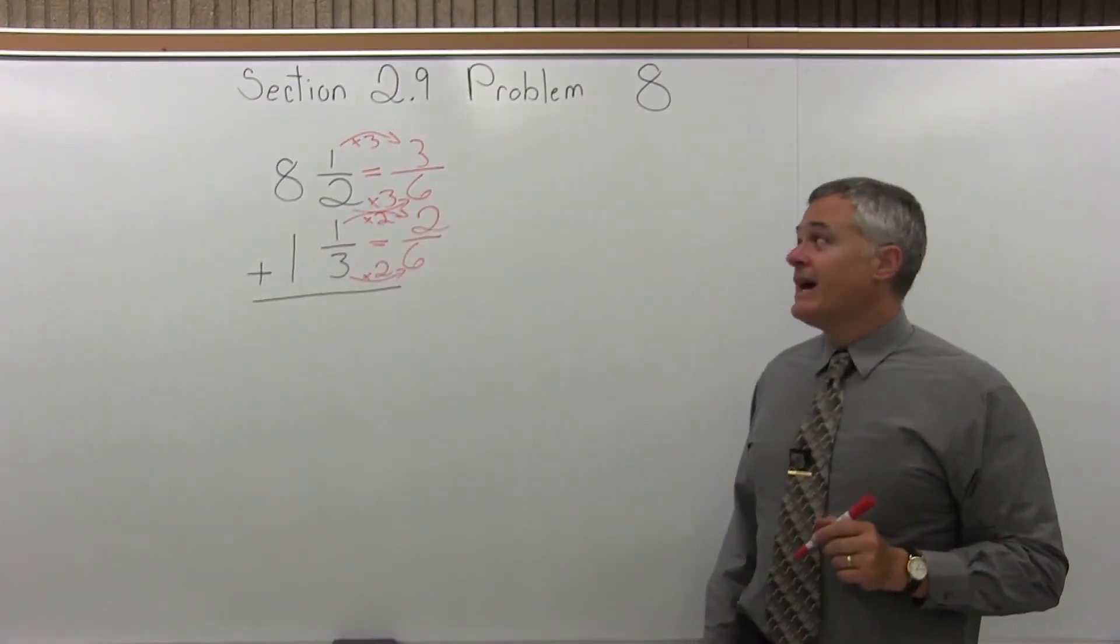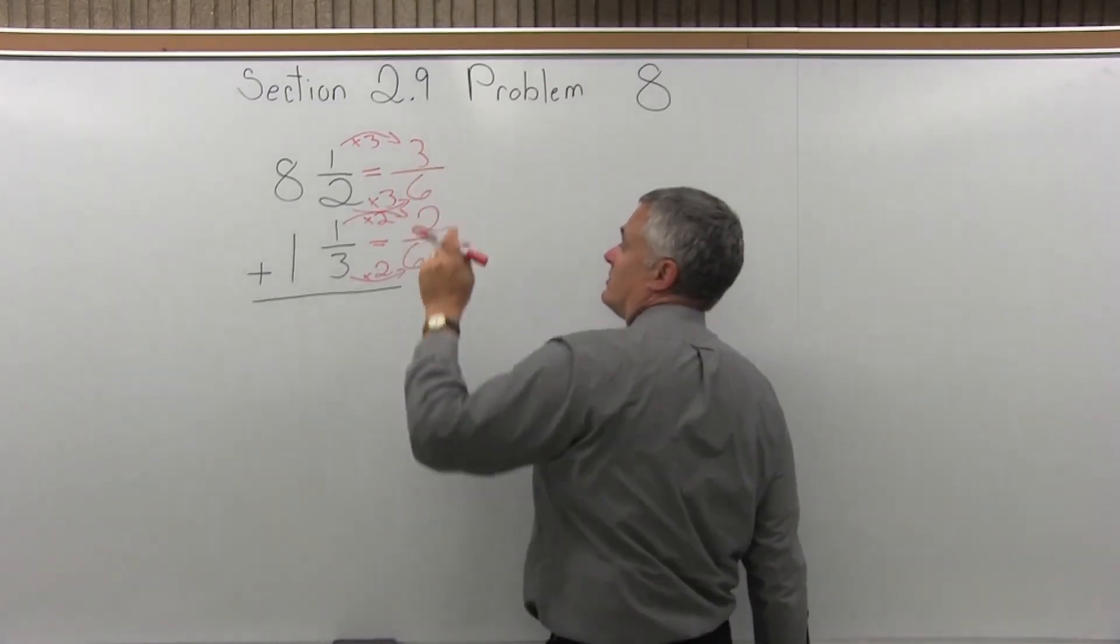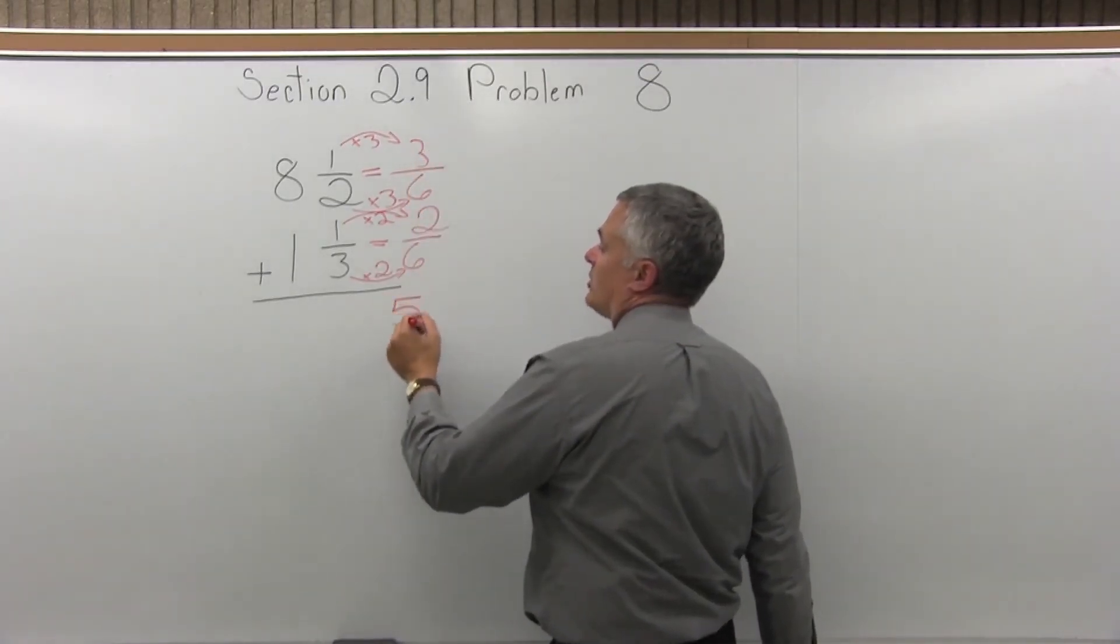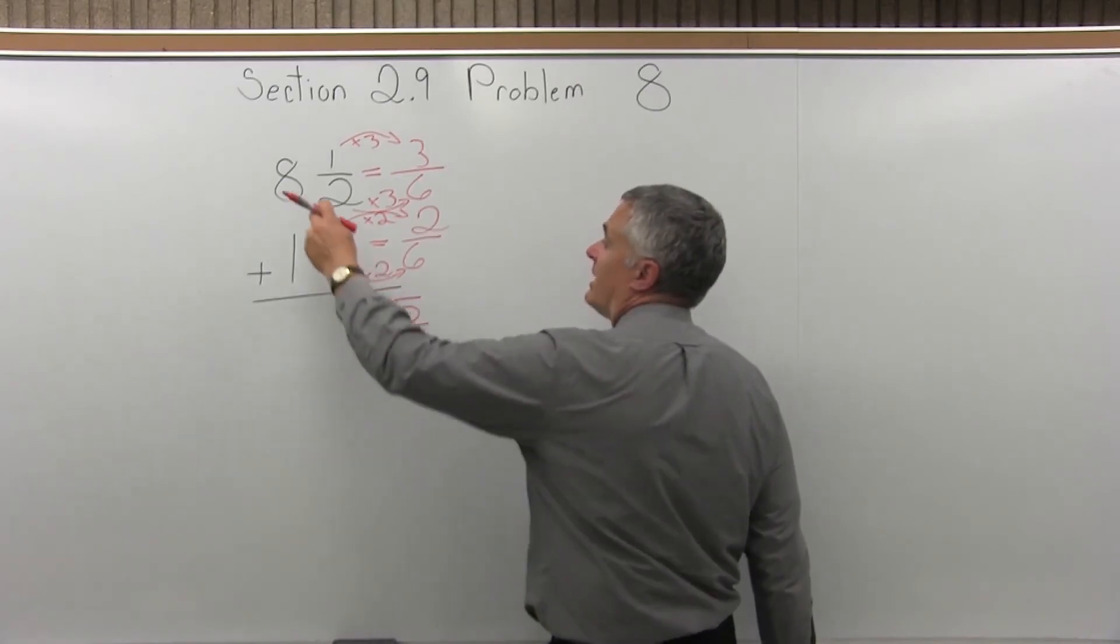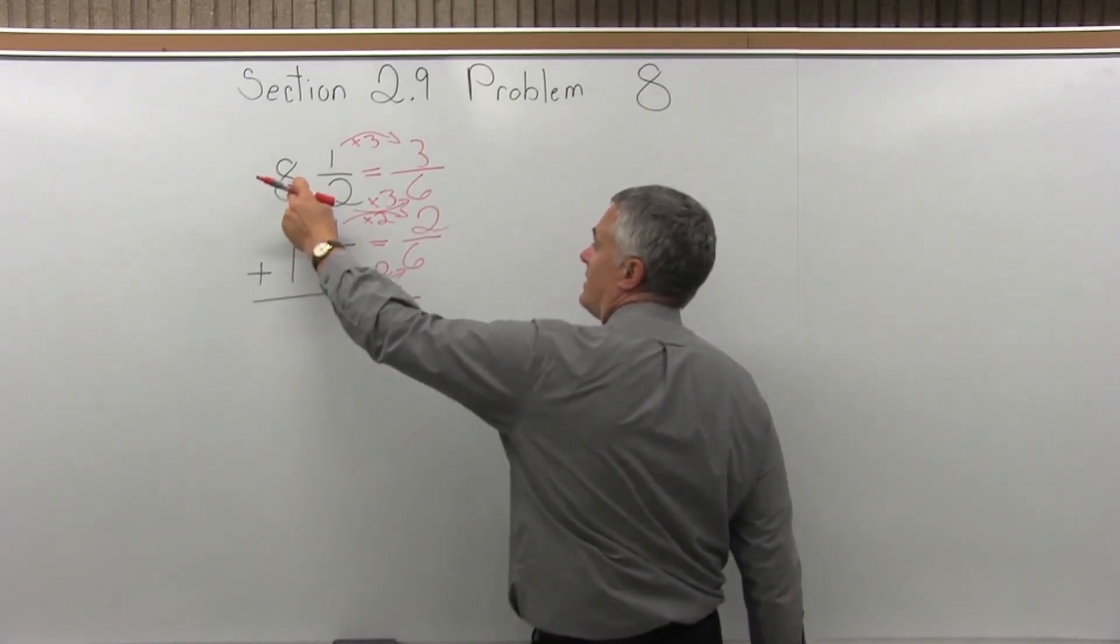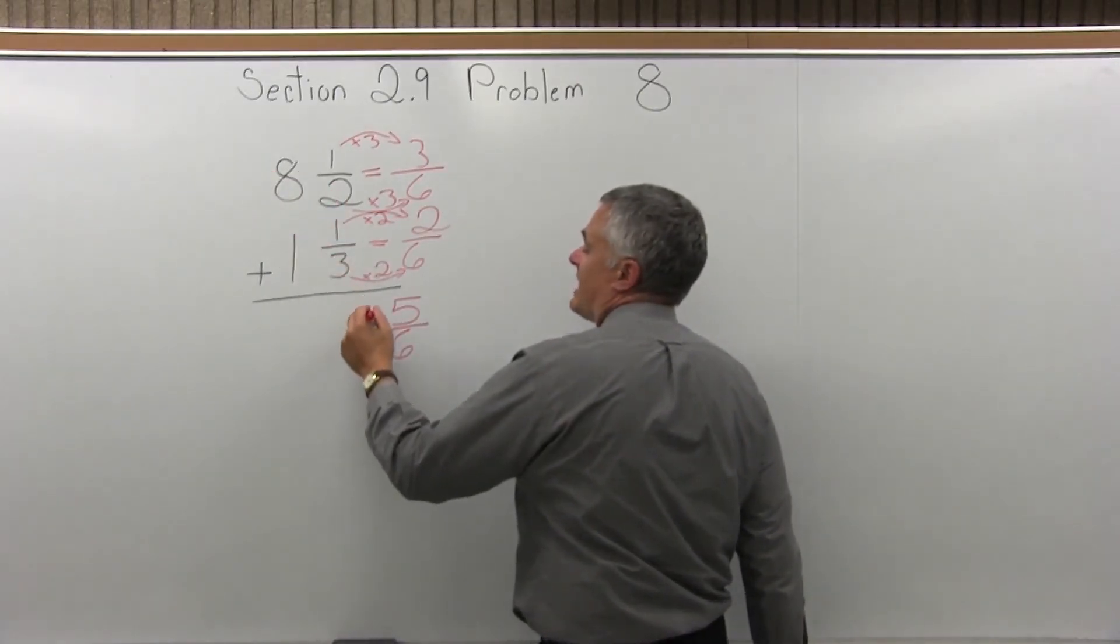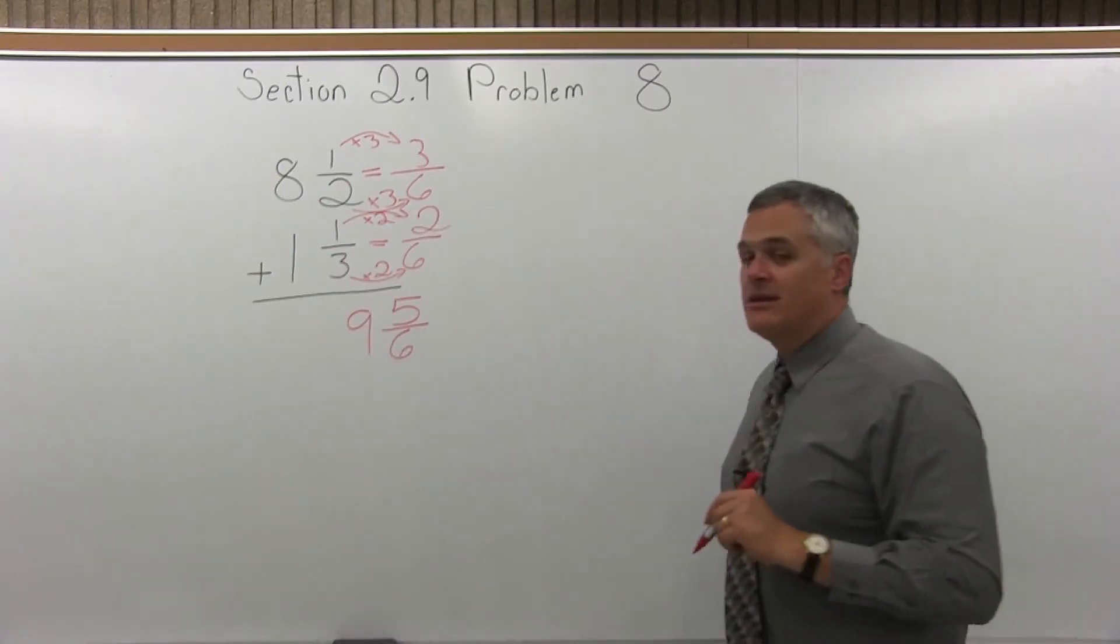So now if I add 3 over 6 plus 2 over 6, the numerator is 3 plus 2 more is 5. My common denominator is 6. And now, don't forget the whole numbers in front, 8 plus 1 more is 9. So my answer is 9 and 5⁄6.